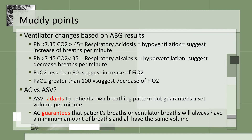A pH greater than 7.45 and CO2 less than 35 indicates respiratory alkalosis with hyperventilation — suggest a decrease in breaths per minute. If PaO2 is less than 80, suggest an increase in oxygen. If PaO2 is greater than 100, suggest a decrease in oxygen because the target range is 80 to 100. You can need to increase rate and increase oxygen at the same time — both are a possibility.